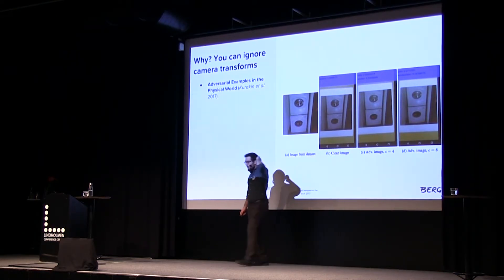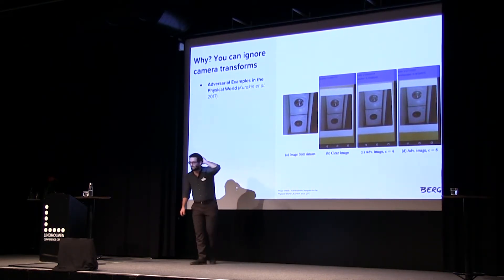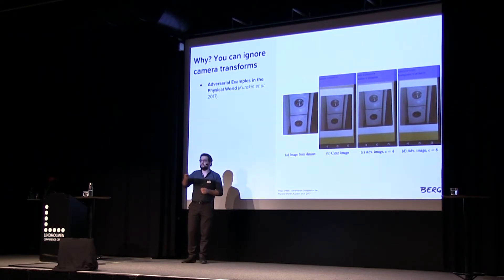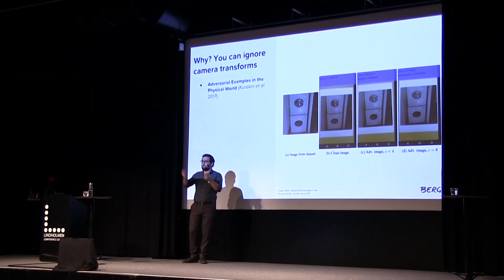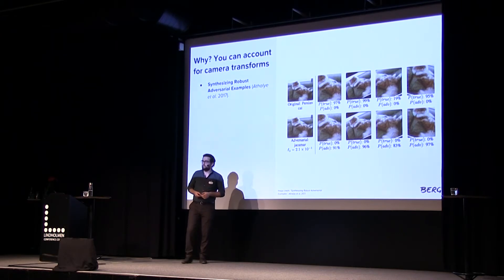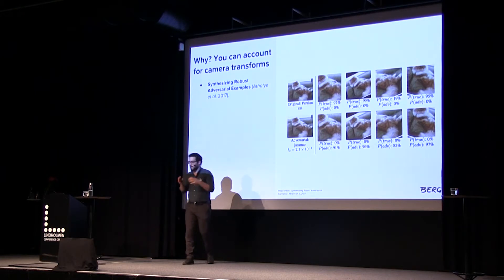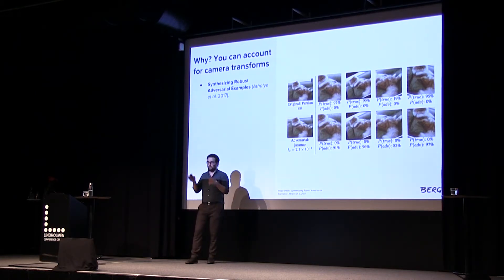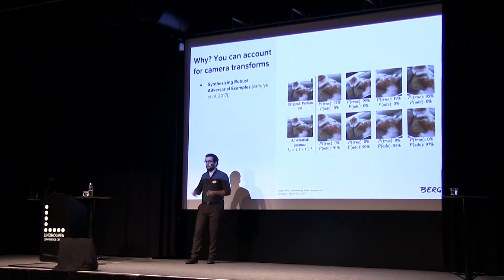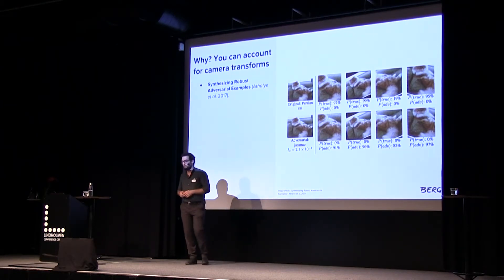You might say they took the image from above and didn't stress it much — in practice objects get rotated, skewed, with different lighting conditions. But some researchers have found you can account for that when building adversarial examples. They can create adversarial examples that are robust to rotation and different types of morphing, and still break models.